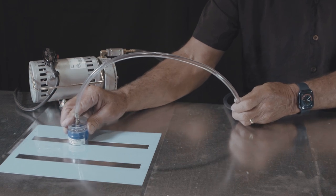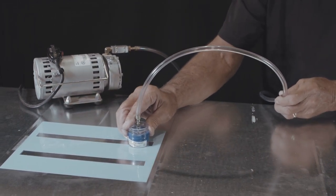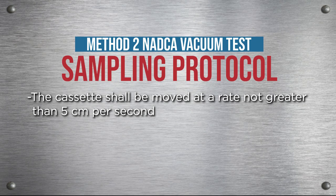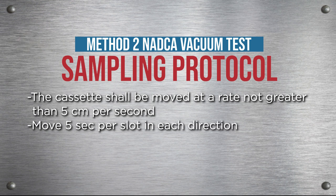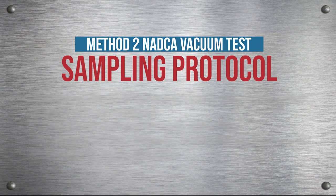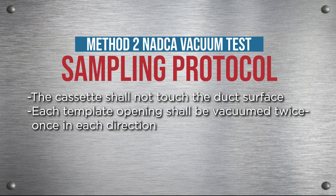Vacuum the open area of the template by sliding the cassette from one end of each template opening to the other. The cassette shall be moved at a rate not greater than 5 centimeters per second, 5 seconds per slot in each direction. The edges of the cassette shall always rest on the template. The cassette shall not touch the duct's surface. Each template opening shall be vacuumed twice, once in each direction.